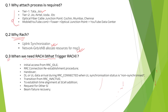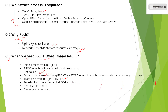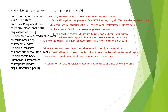When do we need RACH? There are different conditions that will trigger the RACH process: initial access from RRC Idle state, moving from Idle to Connected mode, RRC re-establishment, handover, DL or UL data arrival during RRC Connected when uplink synchronization status is non-synchronized, and transition from Inactive to Active mode. So this covers when and where RACH needs to be transmitted.